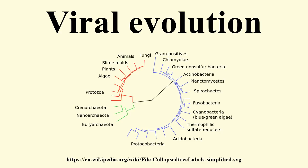Through these mechanisms new viruses are constantly emerging, presenting a continuing challenge to attempts to control the diseases they cause. Most species of viruses are now known to have common ancestors, and there is little doubt that thousands of species of modern viruses have evolved from less numerous ancient ones. The morbilliviruses, for example, are a group of closely related but distinct viruses that infect a broad range of animals, including measles virus, canine distemper virus, rinderpest, and other viruses of seals, porpoises, and dolphins. Although it is not possible to prove which of these rapidly evolving viruses is the earliest, for such a closely related group to be found in such diverse hosts suggests their common ancestor is ancient.